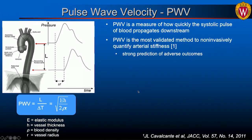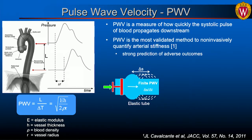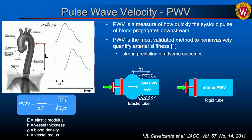Pulse wave velocity is the most validated method to non-invasively quantify arterial stiffness and has shown strong prediction of adverse outcomes, particularly in large population studies. For an elastic vessel, the pressure wave is absorbed in the vessel wall and moves relatively slowly through the body. In contrast, a rigid pipe has an extremely fast pulse wave velocity. As a ballpark number, for a middle-aged adult in the ascending aorta, pulse wave velocity is around four meters per second.